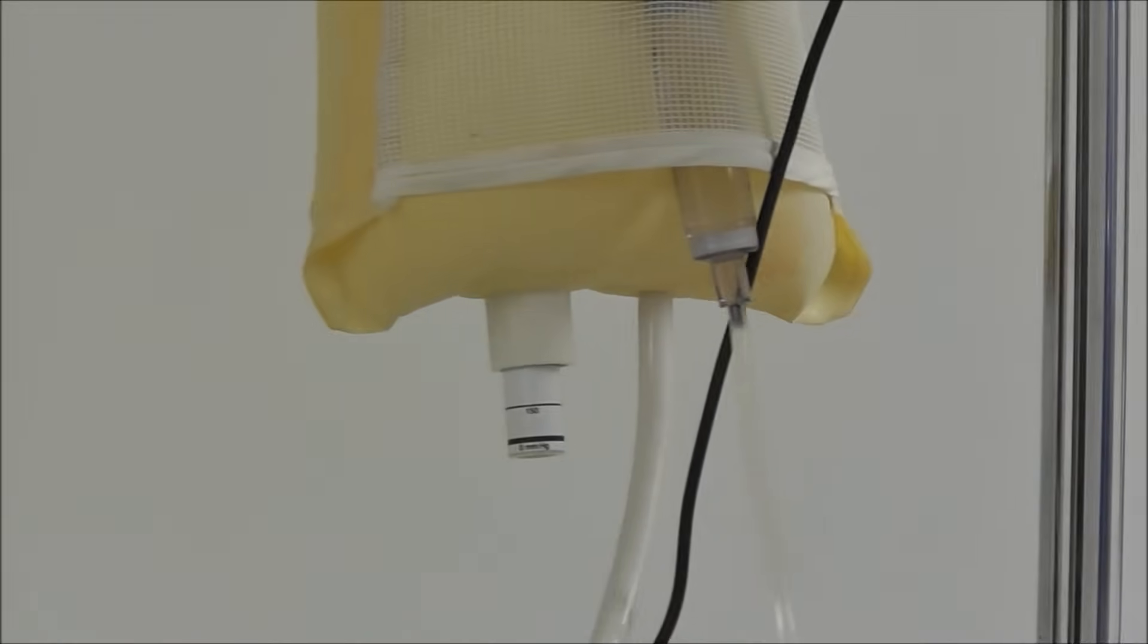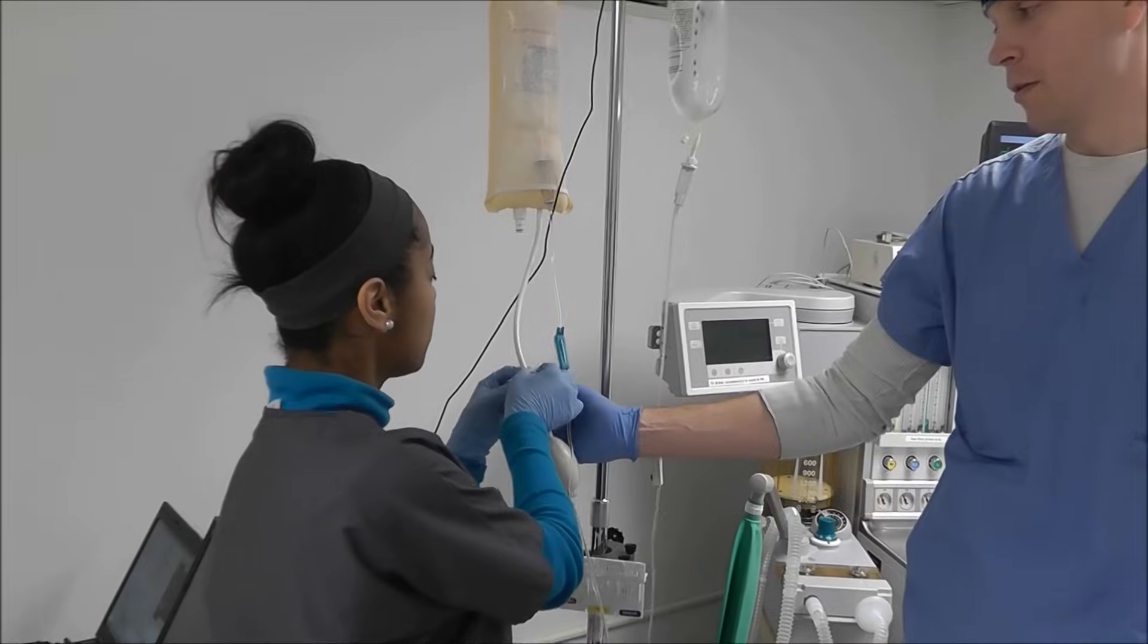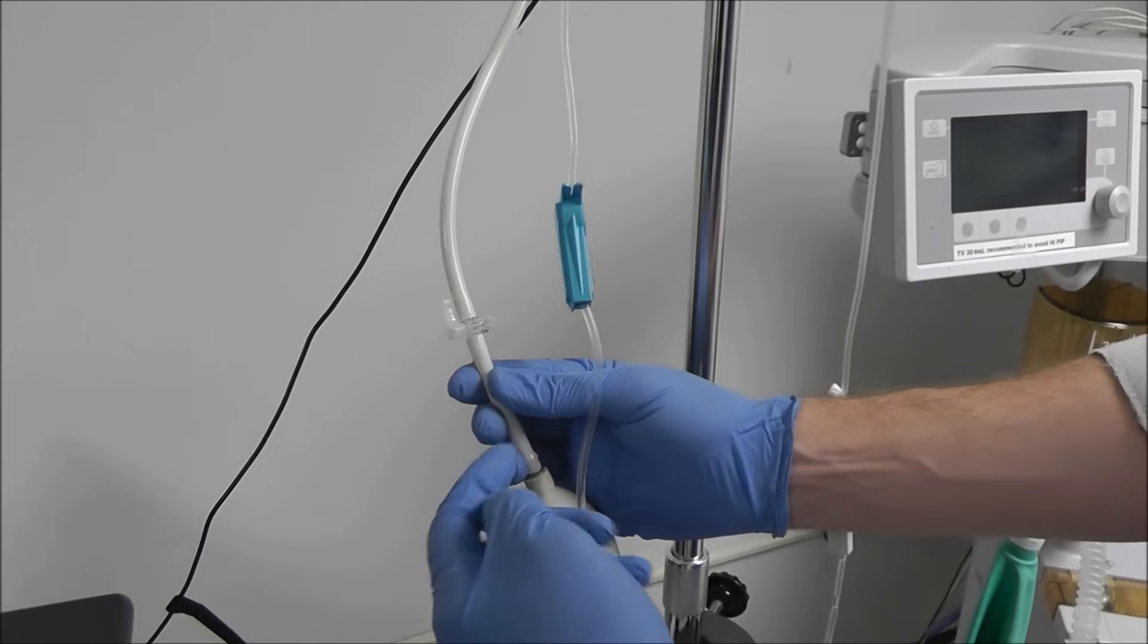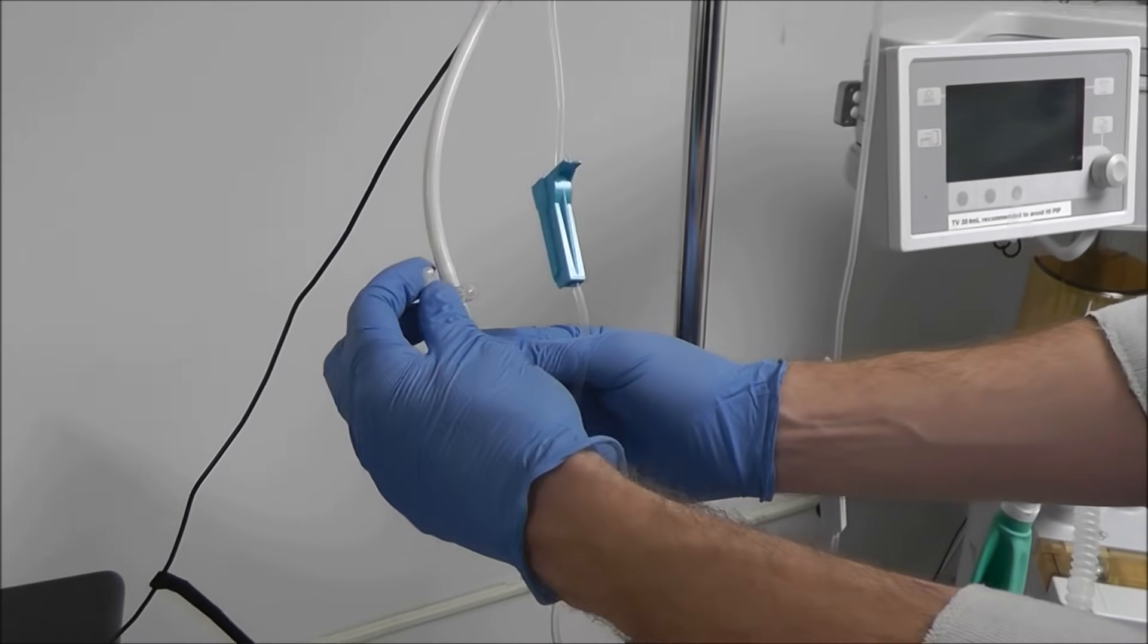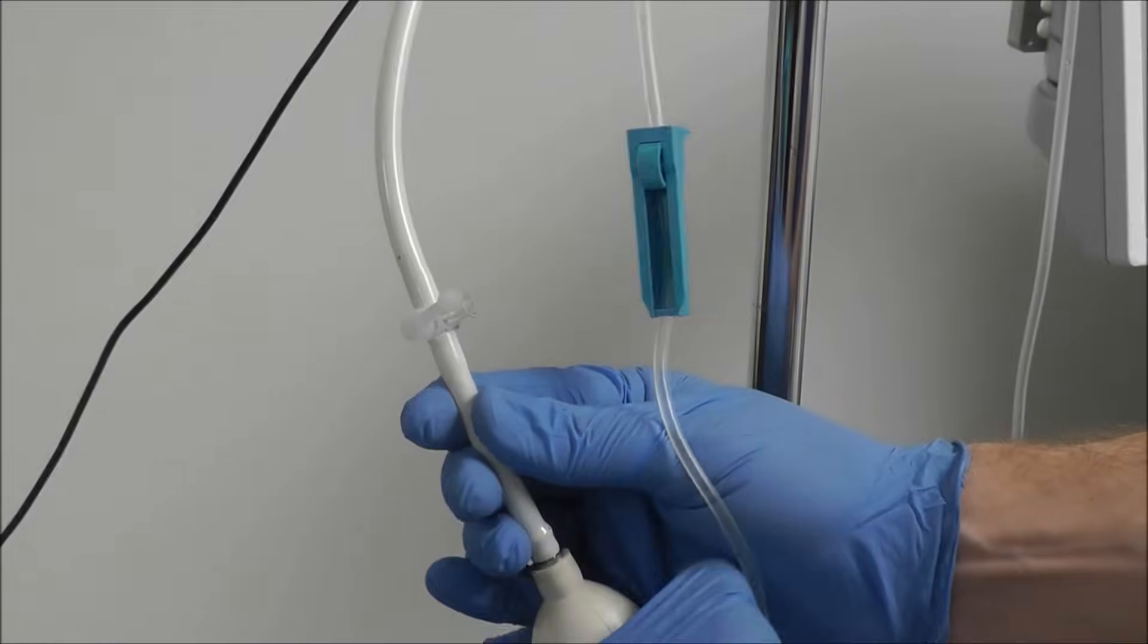And then once we're done, if we see the stop cock, where does that need to be when we're done? You want to turn this towards the bag. That allows no air to escape out. When we want to take the pressure out, we just simply turn the stop cock down. But I don't want to lose my pressure.